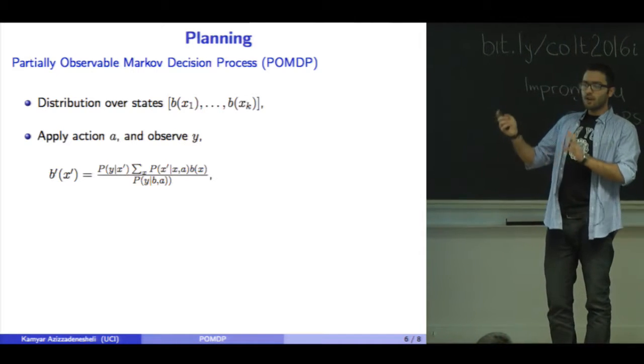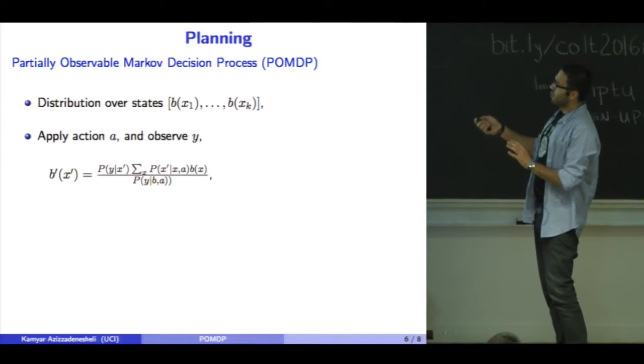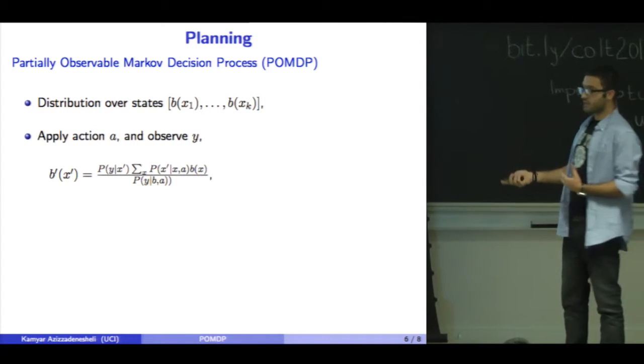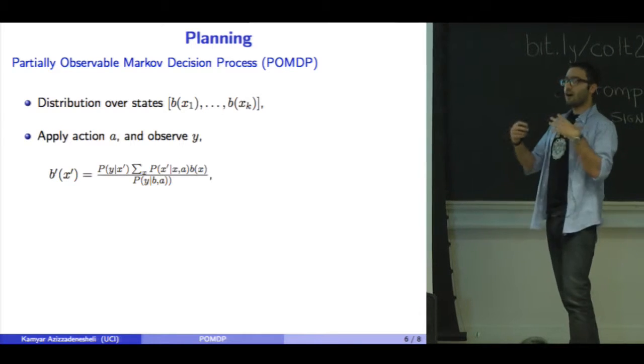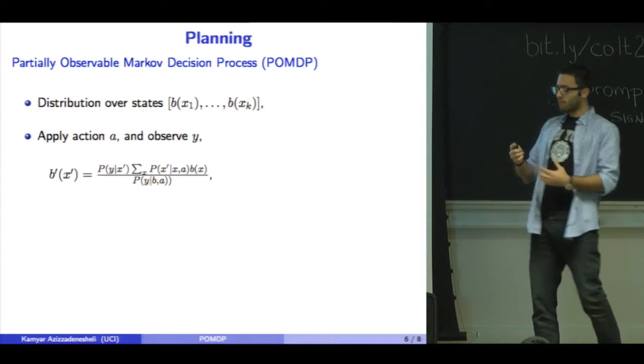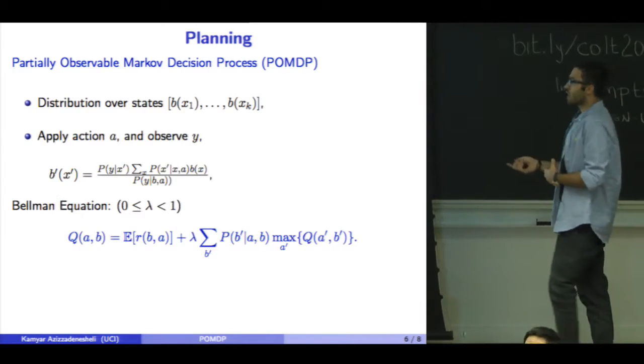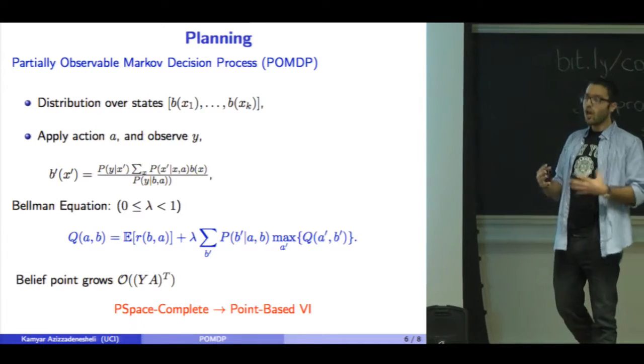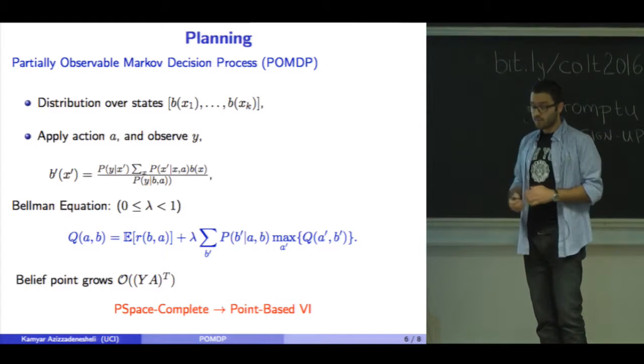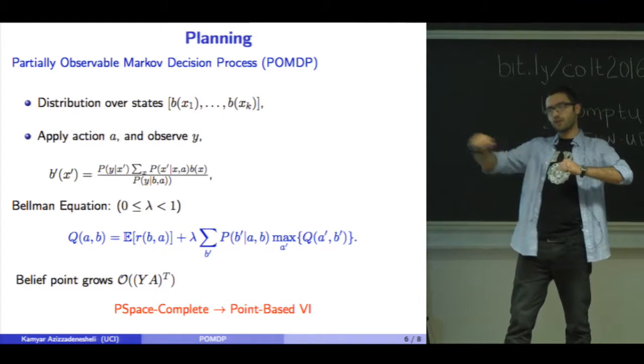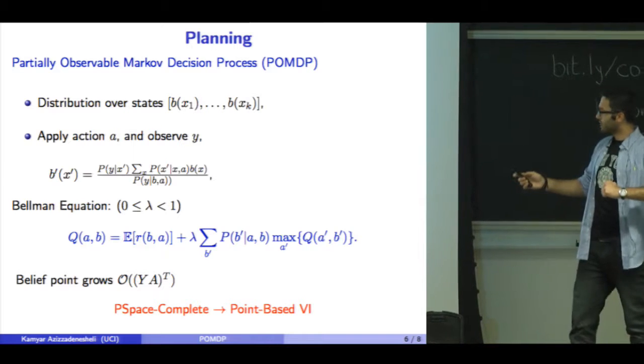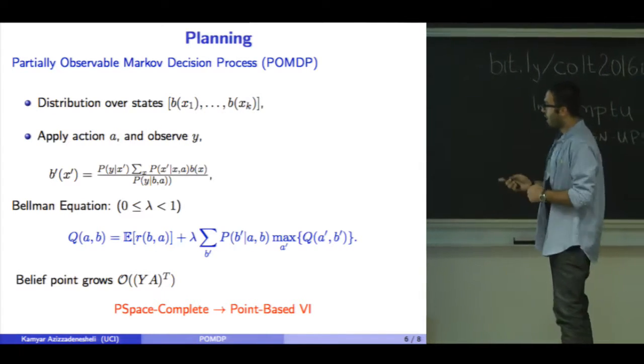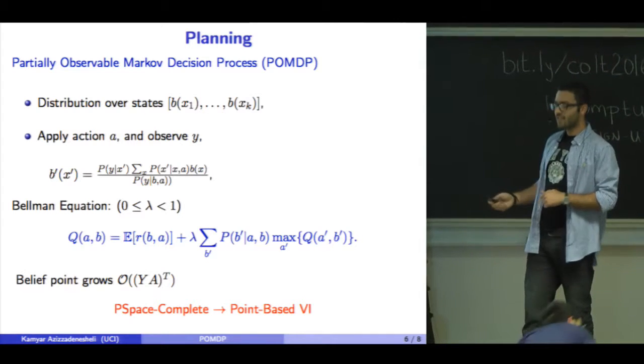To do POMDP planning, the traditional way is through belief space—our belief about the environment's hidden state. The Bellman equation can solve this, but the method is PSPACE-complete. As we increase the horizon, the number of points grows exponentially, making iterative algorithms infeasible. There are ways to relax it, but they're still hard.